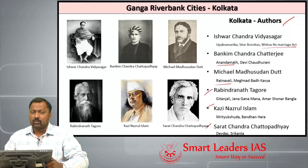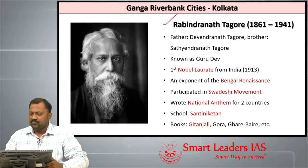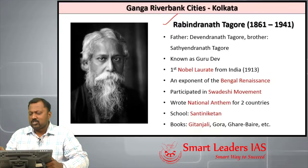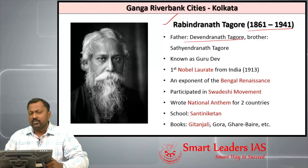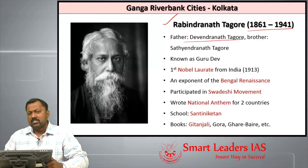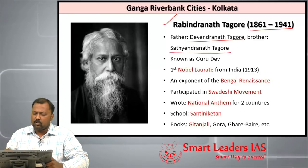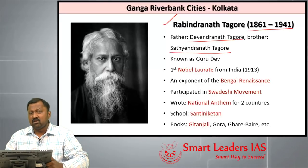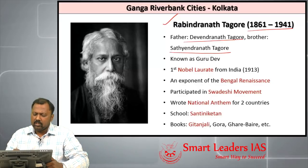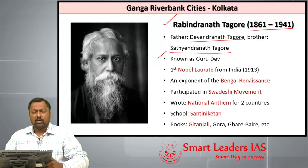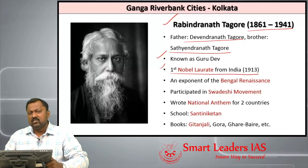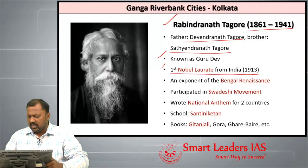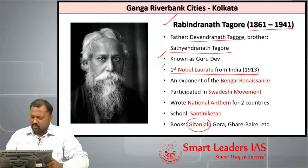Rabindranath Tagore lived from 1861 to 1941. His father was Debendranath Tagore, associated with the Brahmo Samaj of India. His brother, Satyendranath Tagore, was the first ICS officer in India. Rabindranath Tagore is fondly referred to as Gurudev. He was the first person from India to receive the Nobel Prize, awarded in the field of literature for his important work Gitanjali.